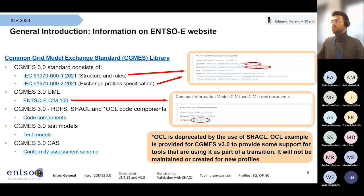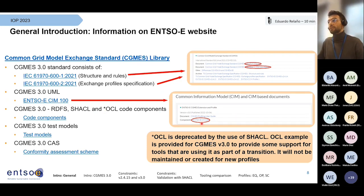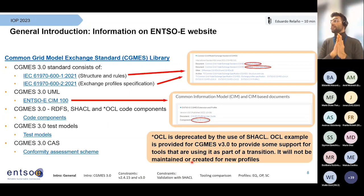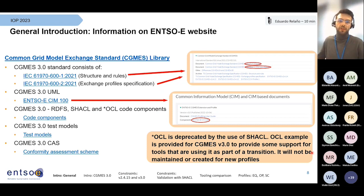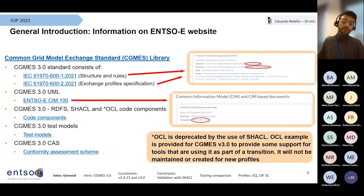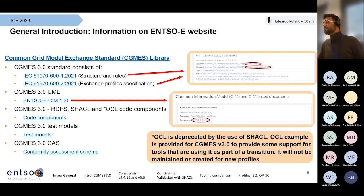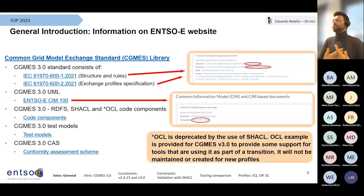Then you have the UML, which is a representation of the model. It's defined in Enterprise Architect software and is available on the website via this link. You also have the code components — mainly the RDFS, which is a schema in an XML representation. You also have SHACL, which is a way of constraining the graph using a shape philosophy, instead of OCL, which does the same thing but with an object-oriented philosophy.